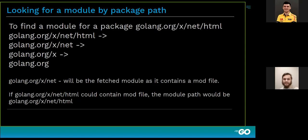In our case, golang.org/x/net is a module because it contains a go.mod file, so it will stop at that step and fetch the module file. The algorithm chooses the deepest module it can find. If there is a module inside the html package, the dependency added to our main go.mod file would be golang.org/x/net/html, since that package is inside the root of that module.